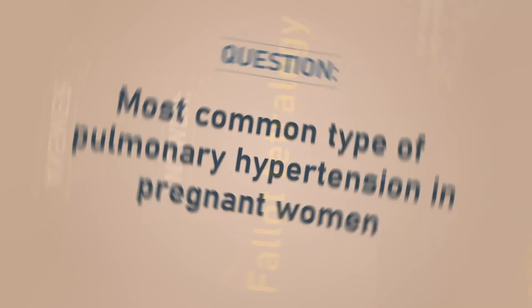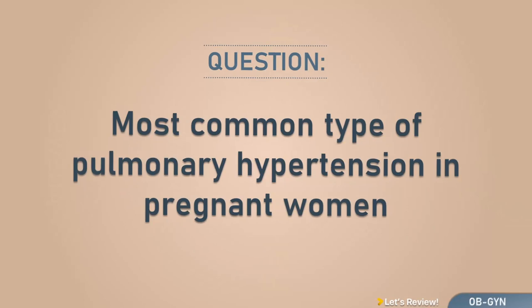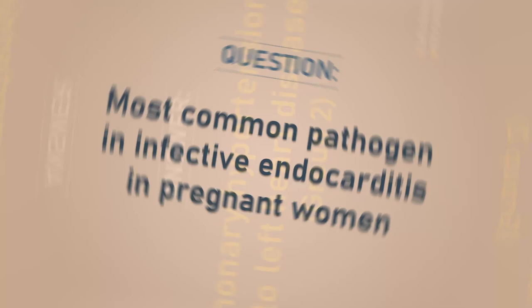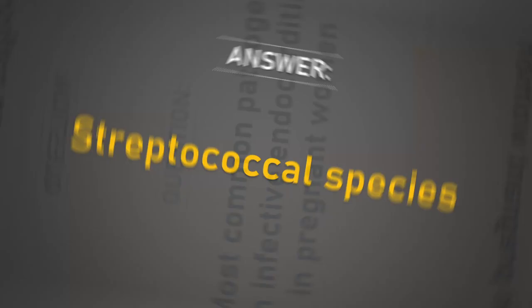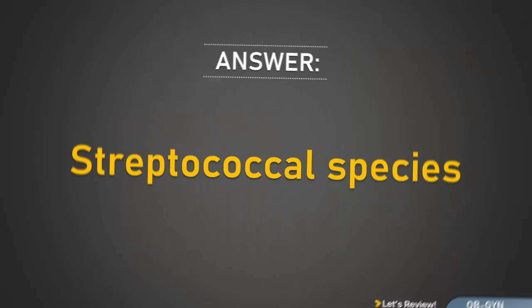Most common type of pulmonary hypertension in pregnant women: pulmonary hypertension due to left heart disease (Group 2). Most common pathogen in infective endocarditis in pregnant women: streptococcal species.